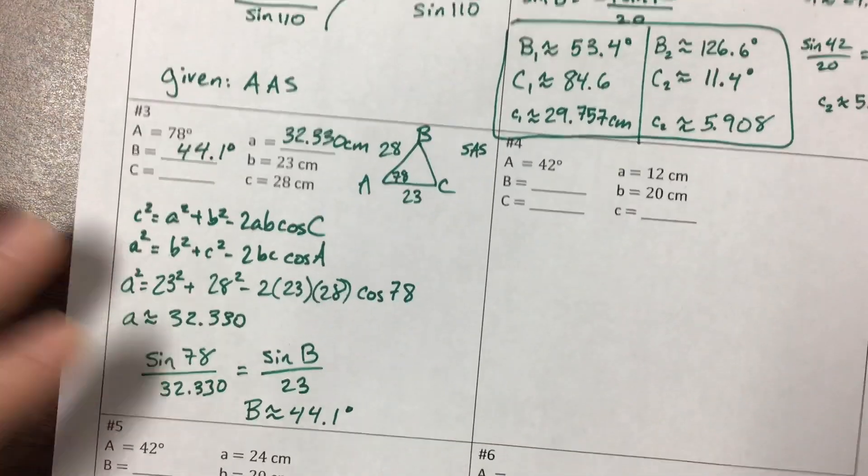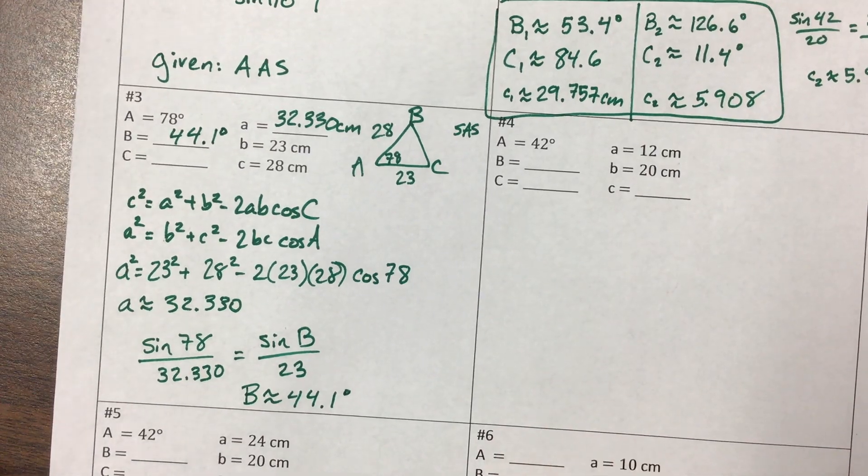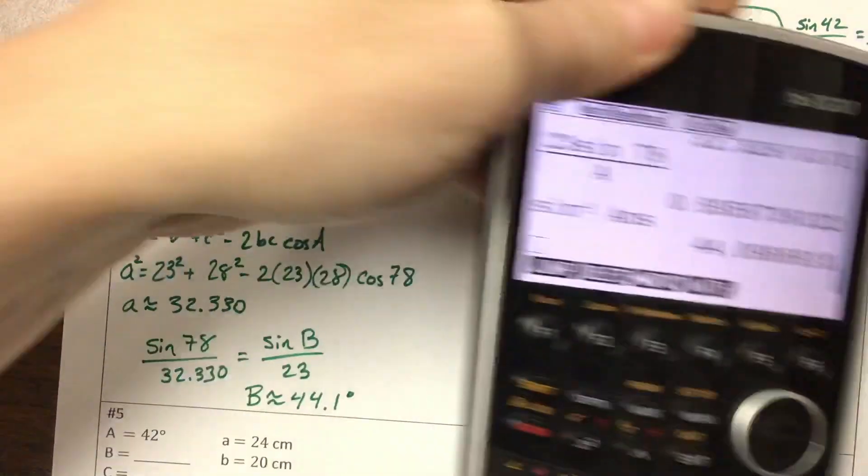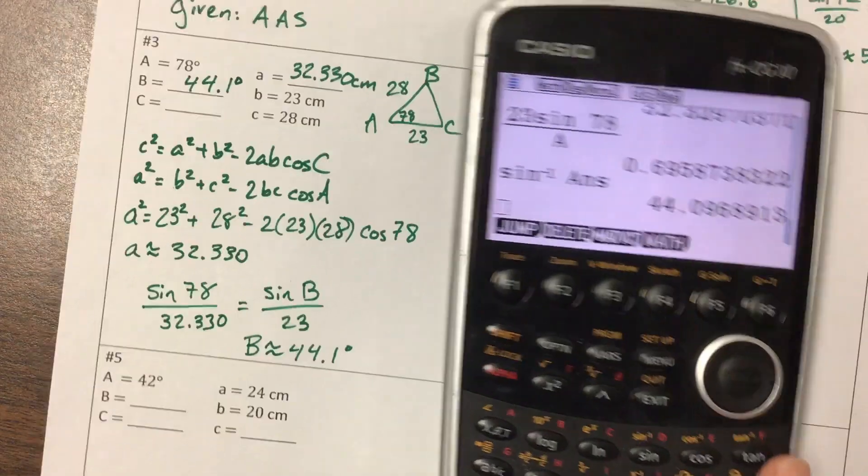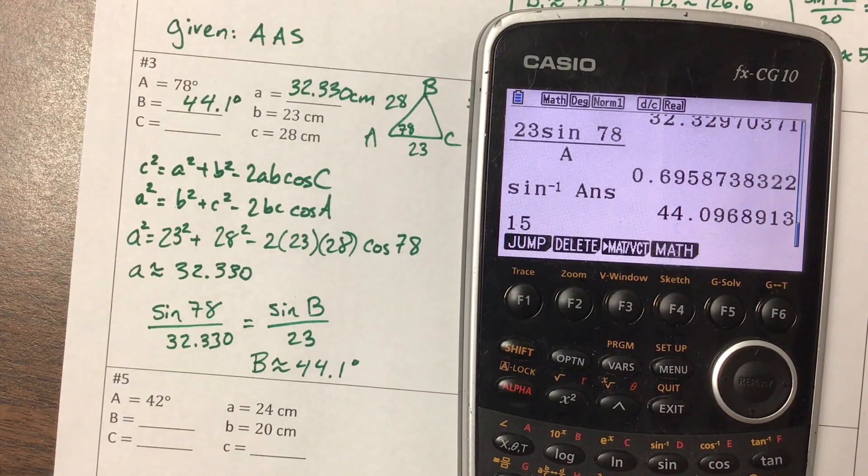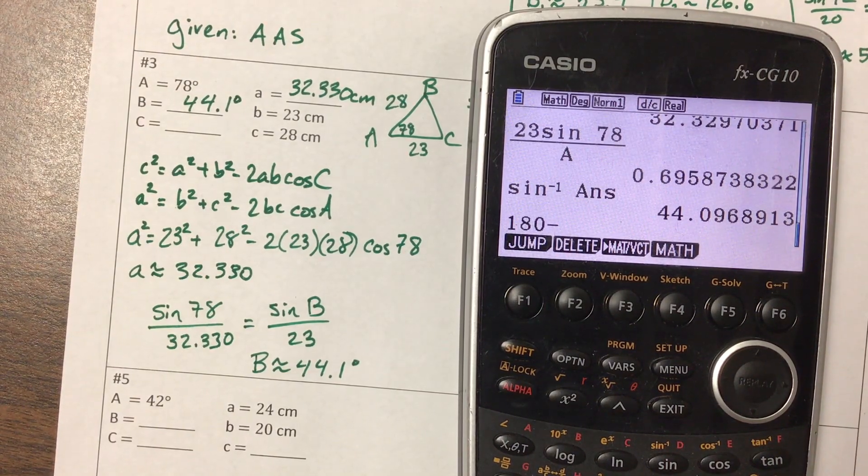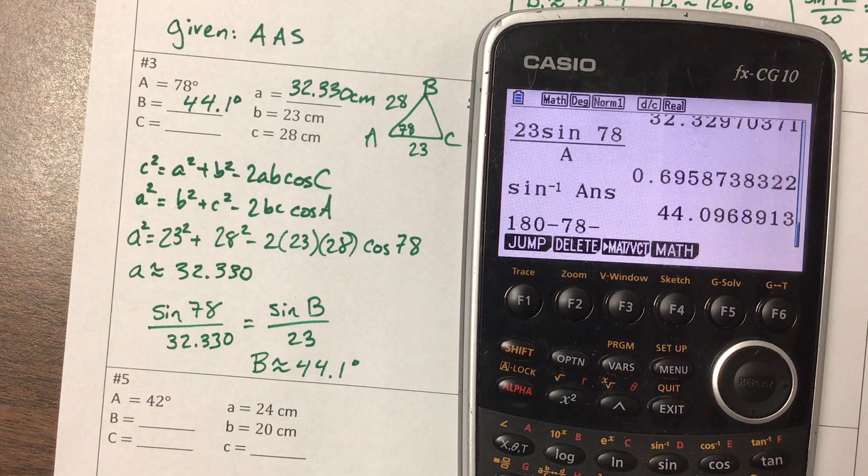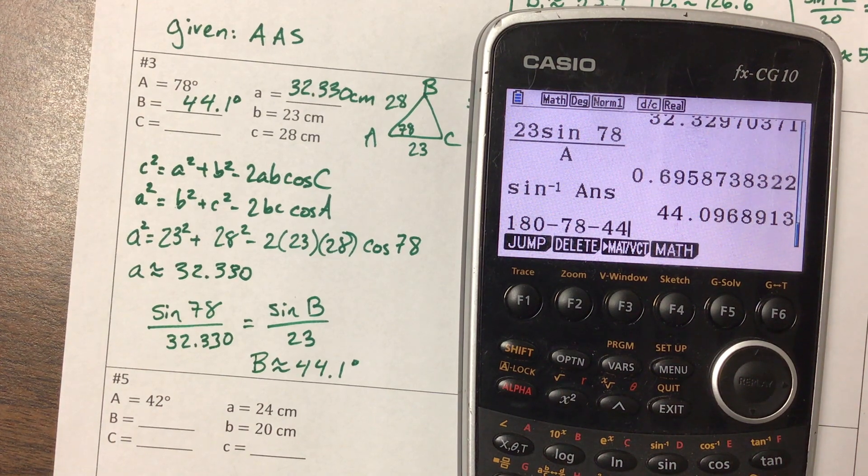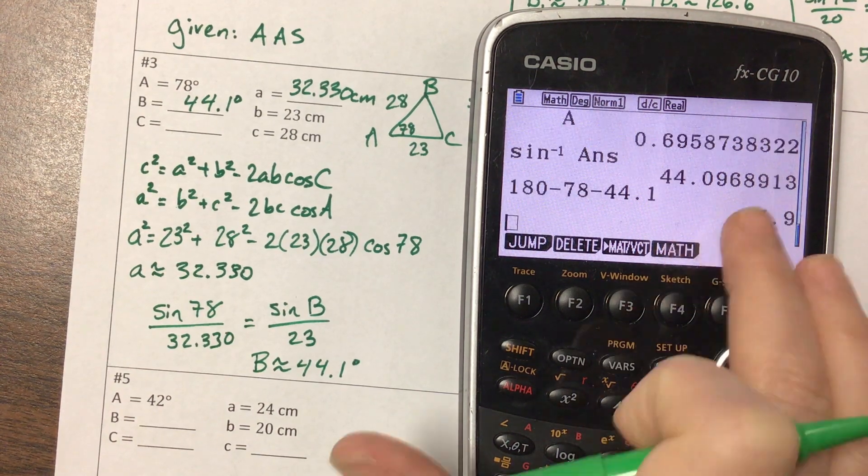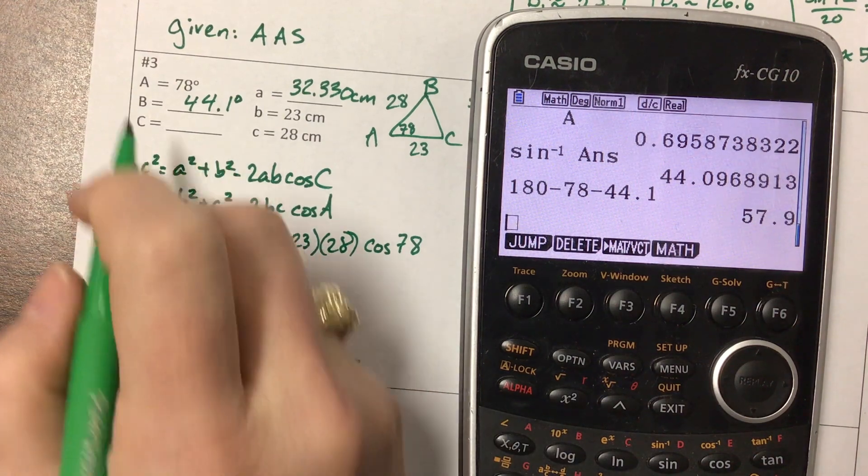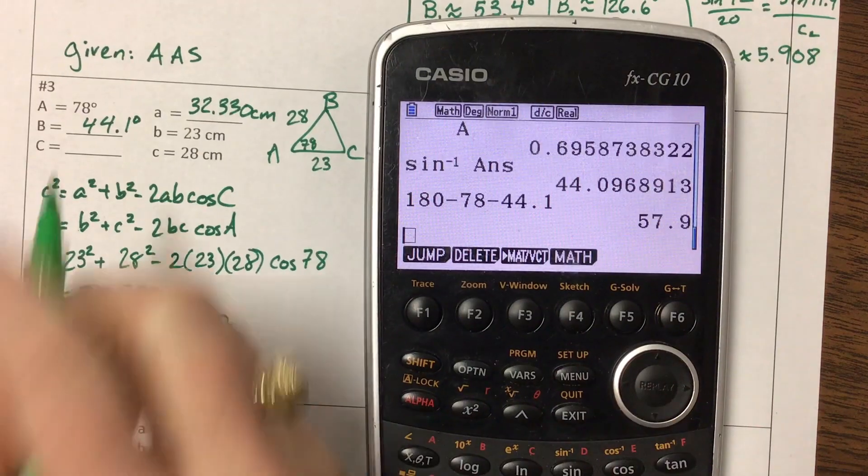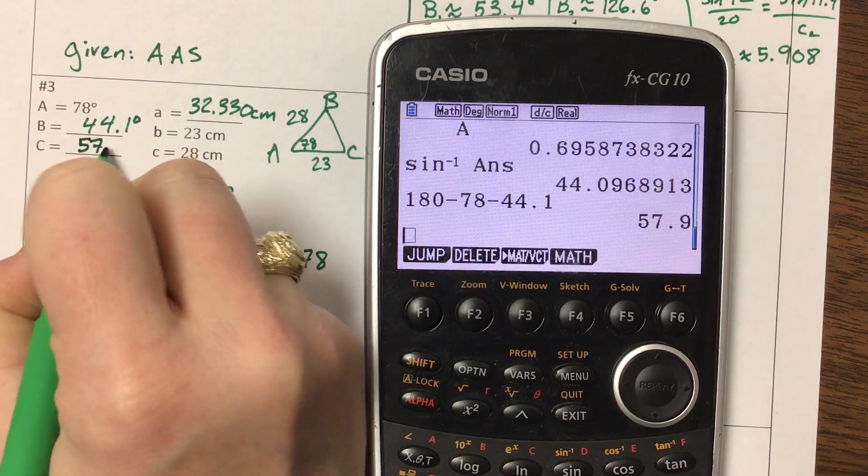Okay, and now I could do the same idea using C, or I could just remember that this is a triangle, and all triangles add up to 180°. So 180° minus 78° minus 44.1° gives me 57.9°.